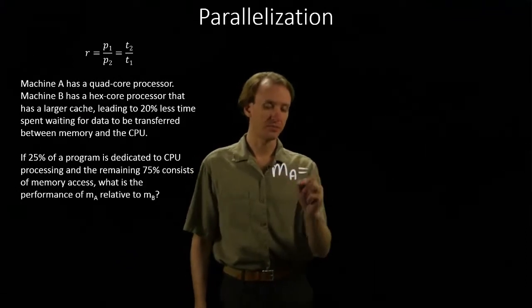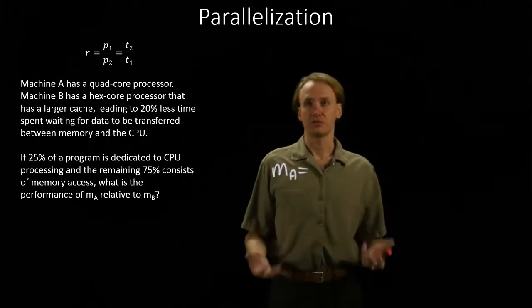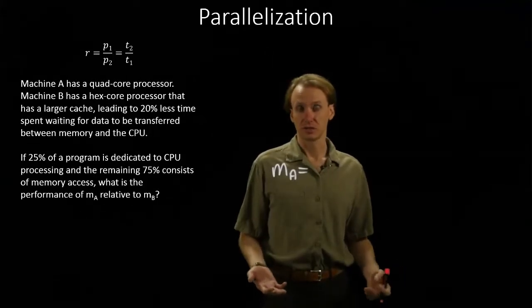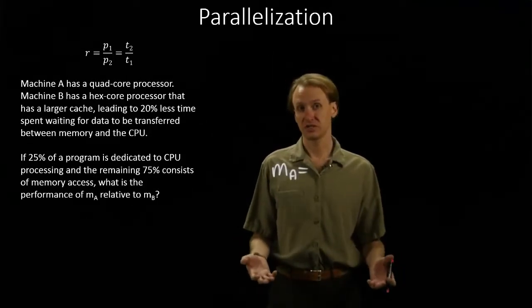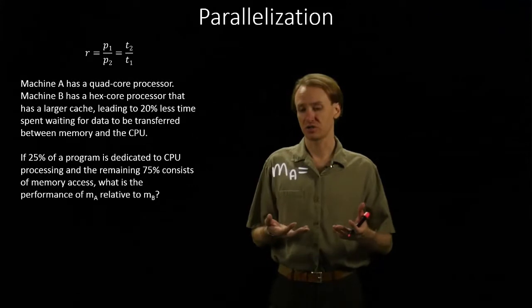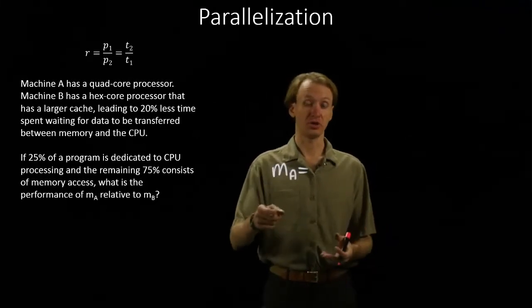So I'll start with machine A, and machine A has a quad-core processor, so I'm going to have to account for the parallelization in the CPU instructions, even for machine A, before I even look at machine B.